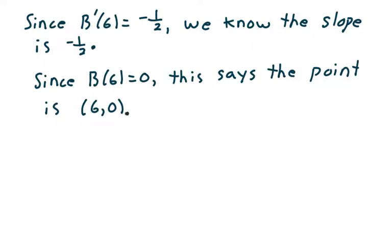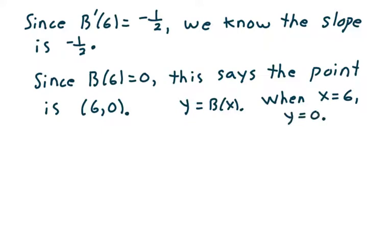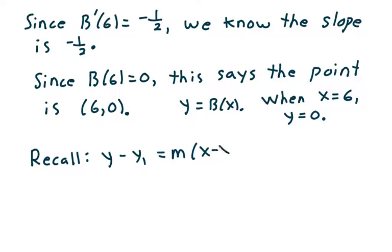Remember that y equals b of x, and so when x equals 6, the corresponding y value has to be 0. Now recall, we have y minus y₁ equals m times x minus x₁. This is what we're going to need to find the equation of the tangent line.